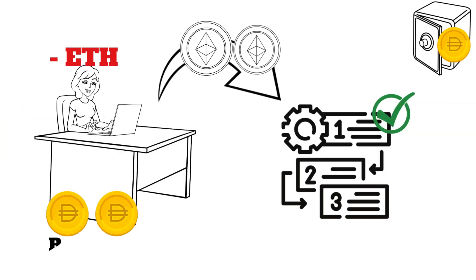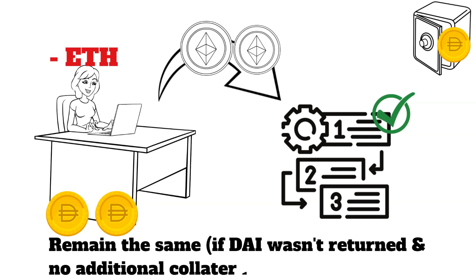In this scenario, the amount of DAI you have will remain the same. However, the value of your collateral will decrease as some of it was sold.